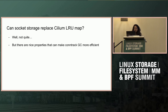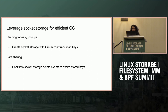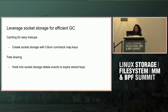Can we use socket storage to replace the Cilium LRU map? Unfortunately, not quite. But let's look at how we can use those properties to make conntrack GC more efficient. We can cache the conntrack entry keys that Cilium creates in socket storage for easy lookups. And we can hook into socket storage delete events so that we can expire conntrack entries associated with a socket that's going away — fate sharing.